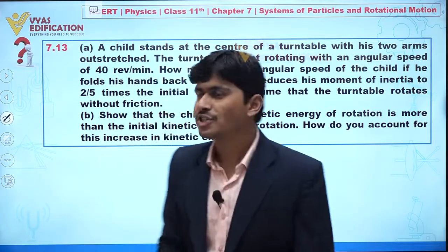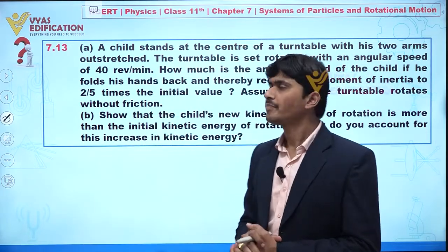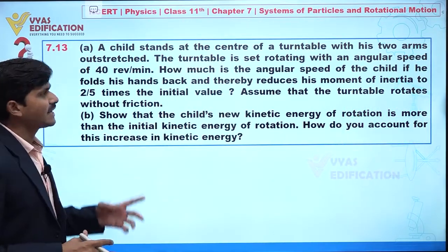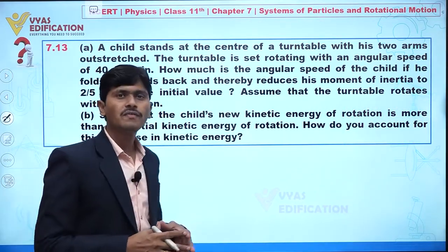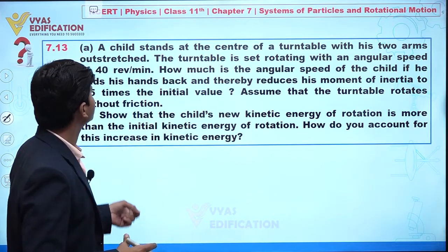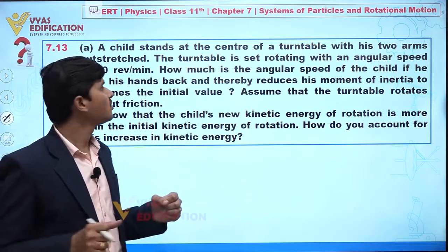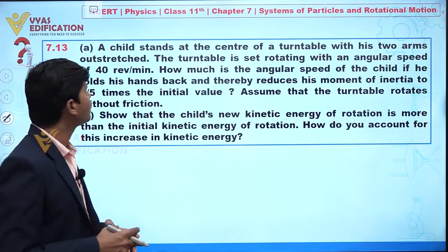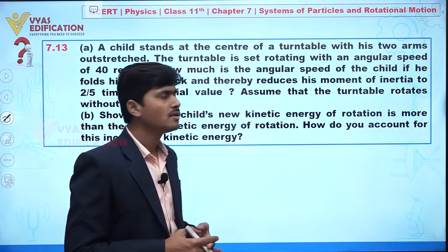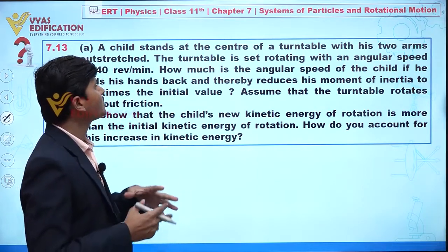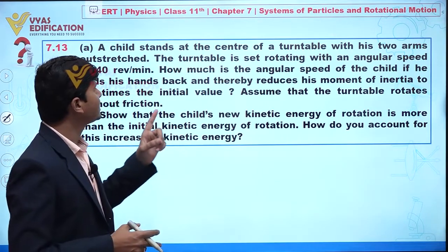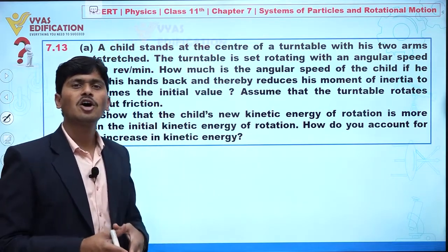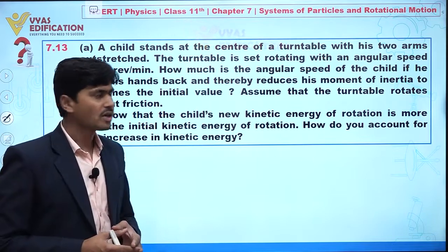We are going to discuss question number 7.13. In this question, a child stands at the center of a turntable with both arms outstretched. The turntable is set rotating with an angular speed of 40 revolutions per minute. We need to find the angular speed of the child if he folds his hands back and reduces his moment of inertia to two-fifths of its initial value.